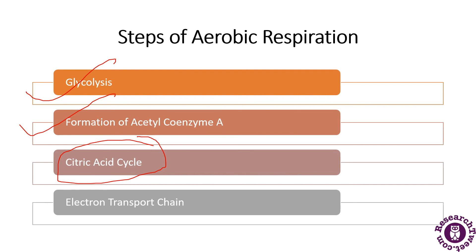The third step is the citric acid cycle, also known as the Krebs cycle, as depicted in the diagram. In this stage of aerobic respiration, the cycle undergoes a reaction that produces two molecules of carbon dioxide, one molecule of ATP, and reduced forms of NADH and FADH2.